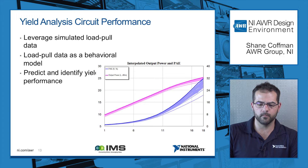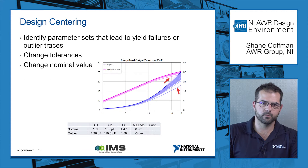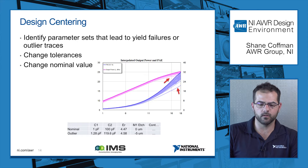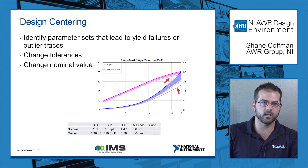If you look at the graph on the bottom, we're actually looking at the interpolated PAE and output power for a yield analysis where the impedances presented to the device were arbitrary and we interpolated the output power and PAE. Once you're done doing a yield analysis, a designer is going to want to identify the parameter sets that cause the yield failures or correspond to the outlier traces on the graph. Then they're going to either pay more money and try to change the tolerances of their surface mount components, or they're going to center the design so that the yield is higher.